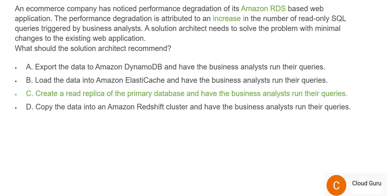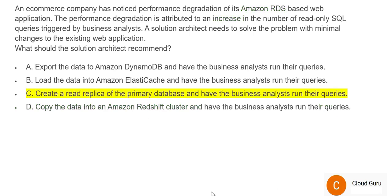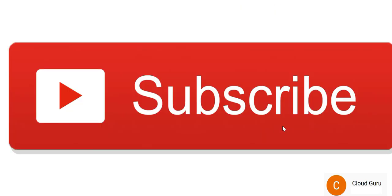Option C — creating a Read Replica — is correct. Option D suggests using a Redshift cluster, but that is unnecessary since you already have RDS, and the question asks for minimal changes. Adding Redshift would be expensive and excessive. So the right answer is to create a Read Replica. Please subscribe to my channel and I'll see you in the next part of this video series.